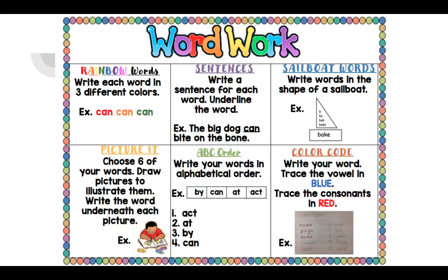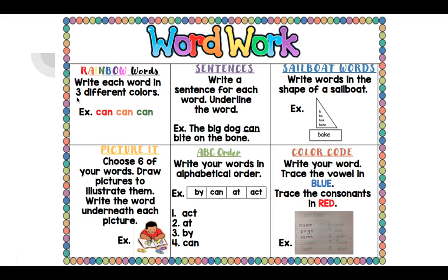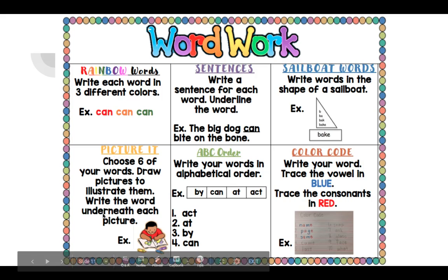Here are your activities. You can choose your rainbow words and do three different colors. Sentences. Write a sentence for each word and underline the word. Sailboat words. Write the words in the shape of a sailboat. Picture it. Choose six of your words and draw a picture to illustrate them.